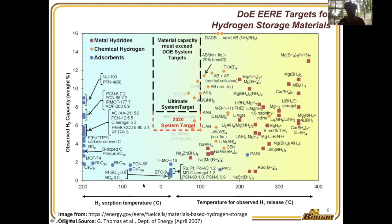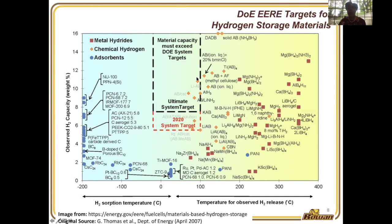We want a desorption temperature low enough that it can be run from the waste heat of the fuel cell, and a high enough theoretical weight capacity to meet Department of Energy system targets. Our weight percent in sodium aluminum hydride is just not high enough. But we can still gain fundamental understanding from studying this material by trying to push the temperature of desorption down. Once we understand how those things work, we can try it with more promising higher weight percent compounds.